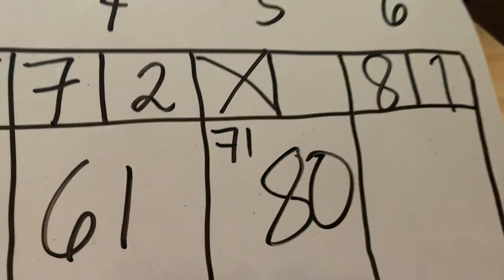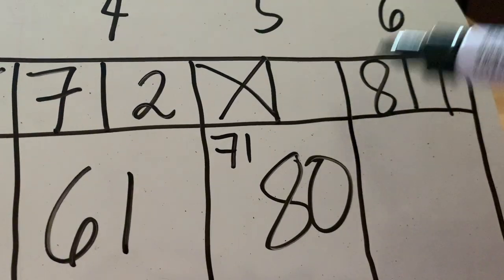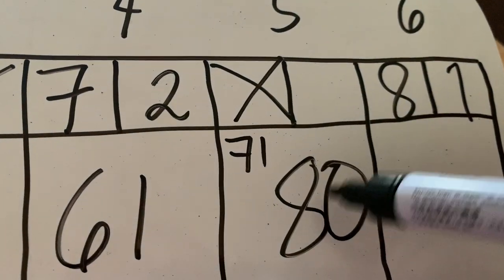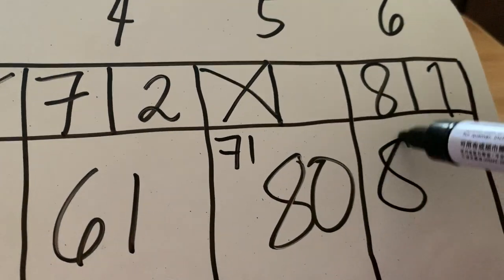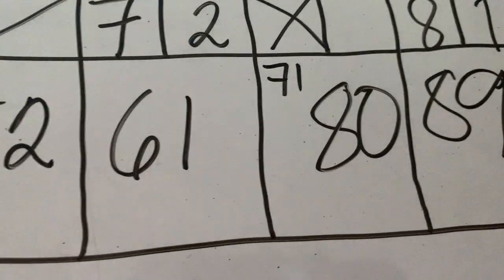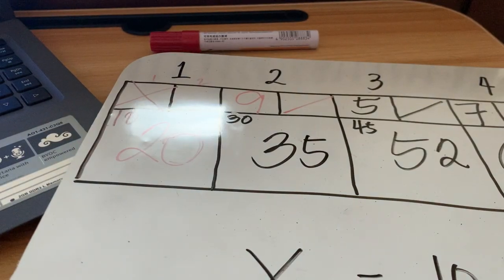So for the sixth frame, you will only add, because there are no marks, no spare or strike, 80 plus 9 is equal to 89. So if you have questions, suggestions, violent reactions, side comments, you can always ask me through messenger teams.